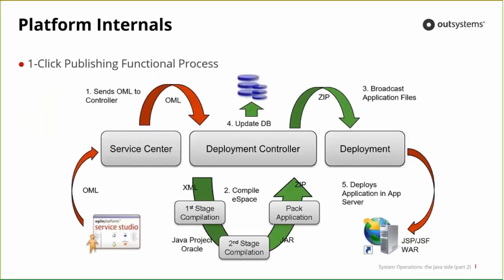The one-click publish is a complicated process, but let's break it down. When we publish something — let's say from Service Studio to Service Center — we're going to send an OML file. OML stands for OutSystems Markup Language; it's basically an eSpace. Service Center will send the OML file to the deployment controller. This is because Service Center is a web application — if you have a farm with several frontends, you only have one controller. Service Studio connects to Service Center (the frontends), which then sends to the deployment controller service. It will grab the XML file, which is the OML (a compressed XML), and do a first compilation — basically creating a Java project.